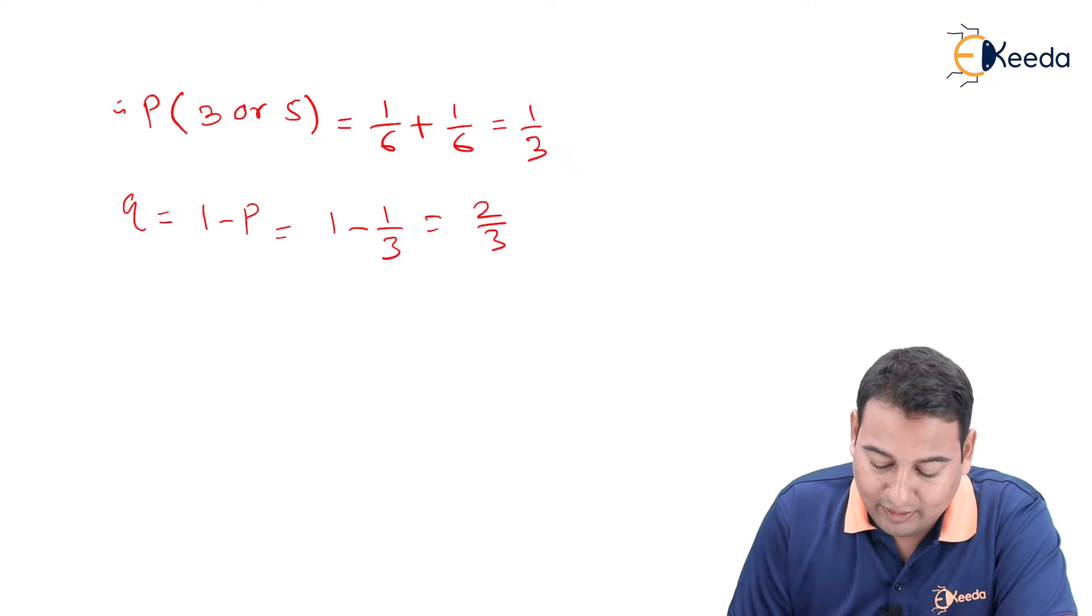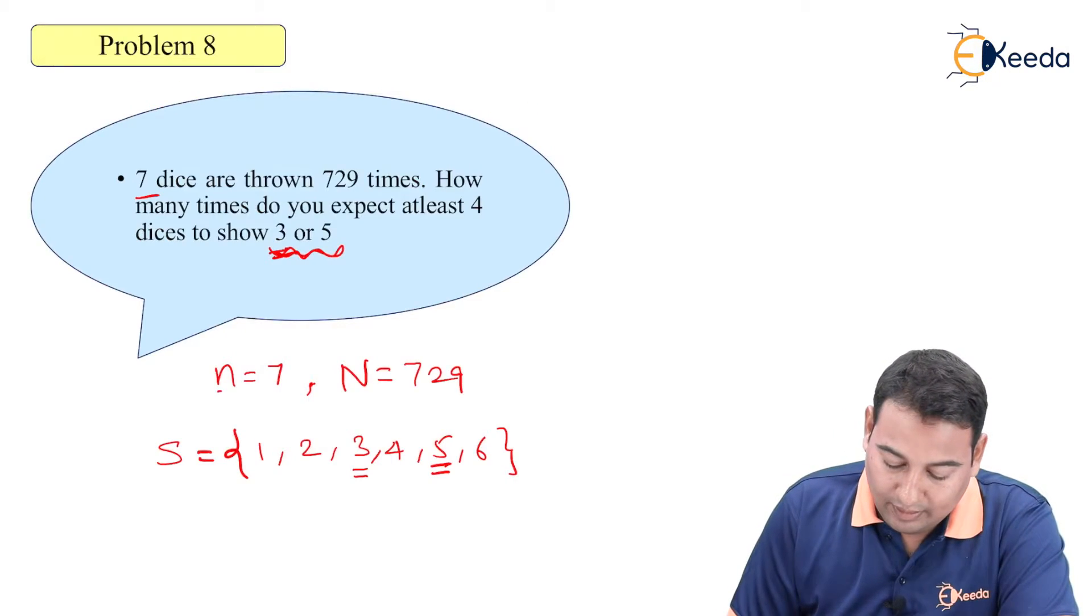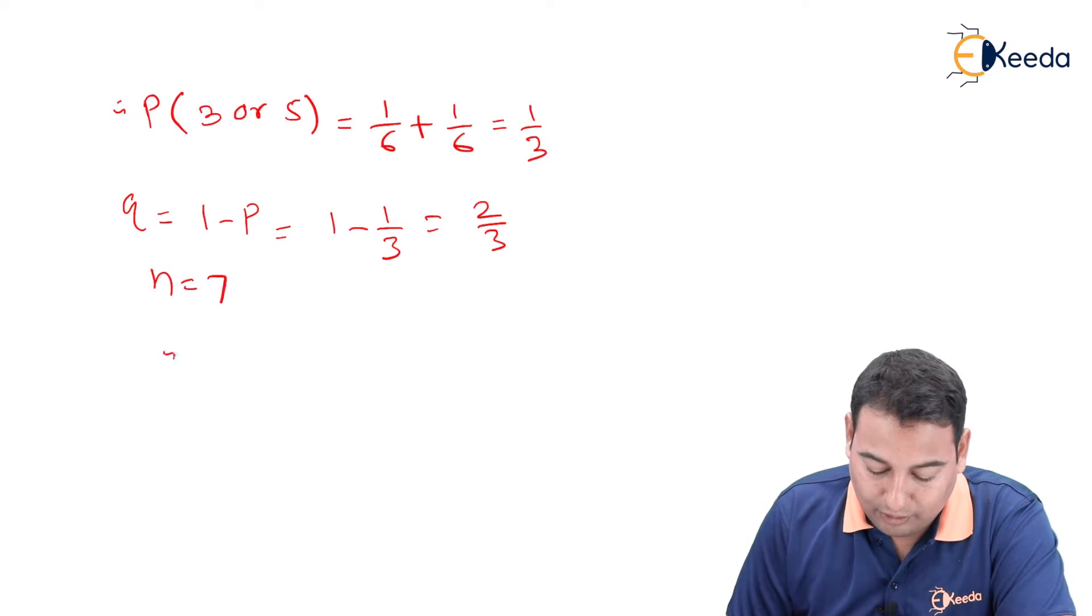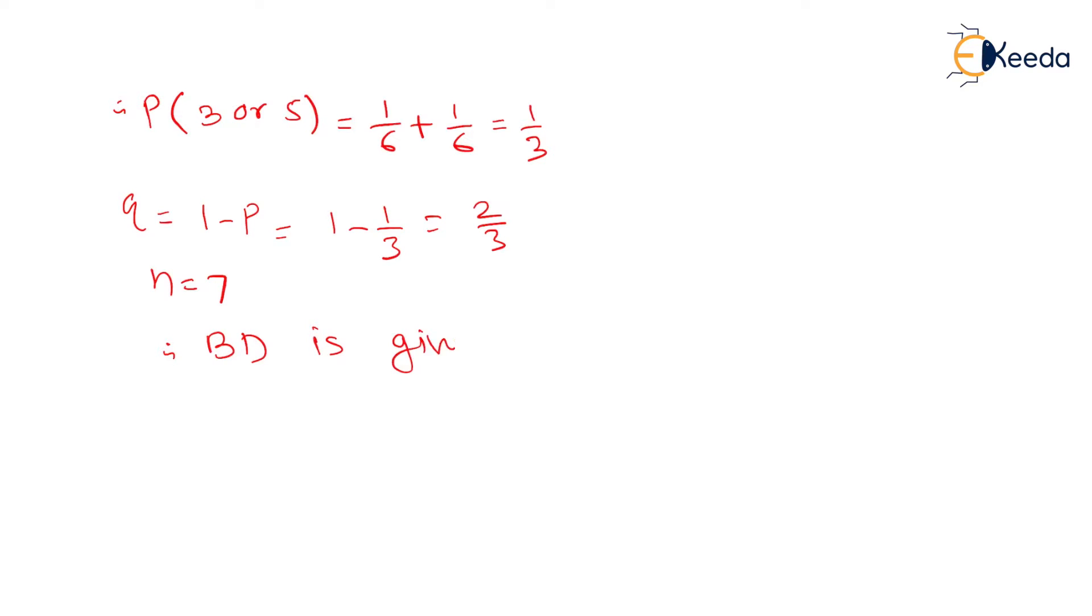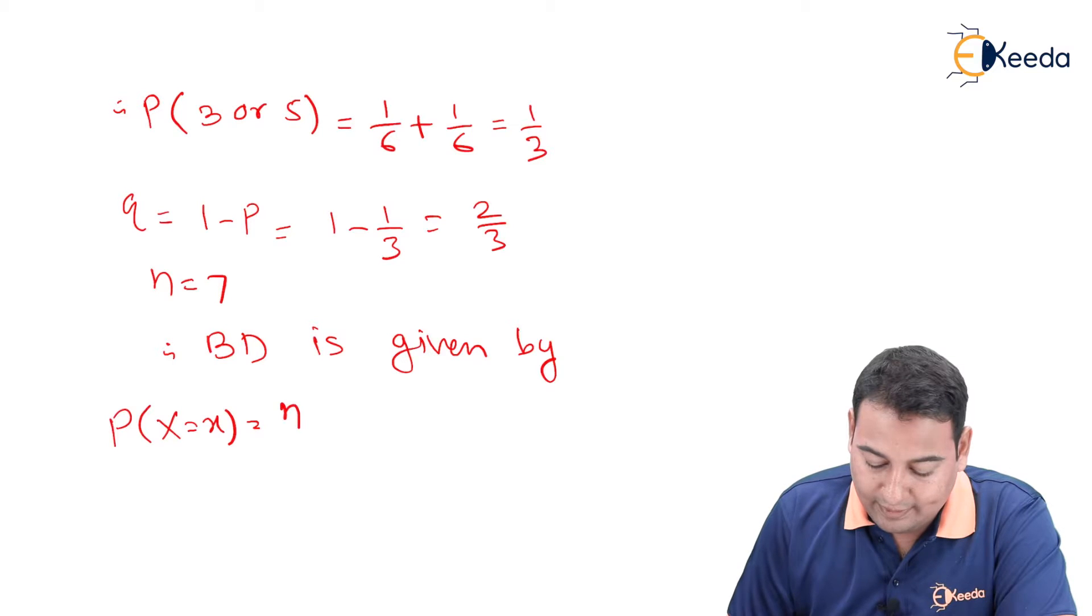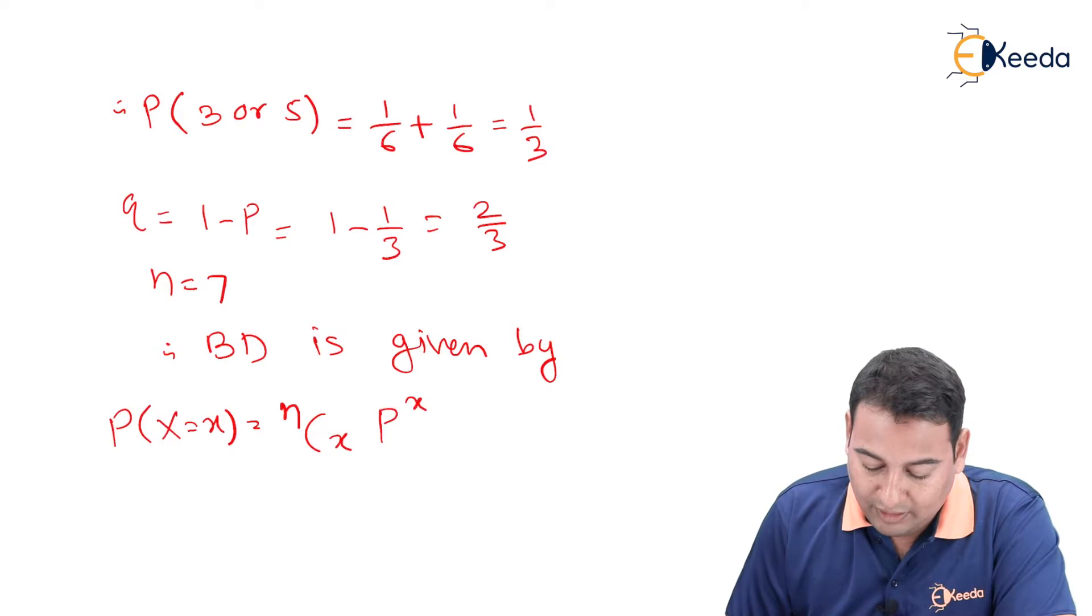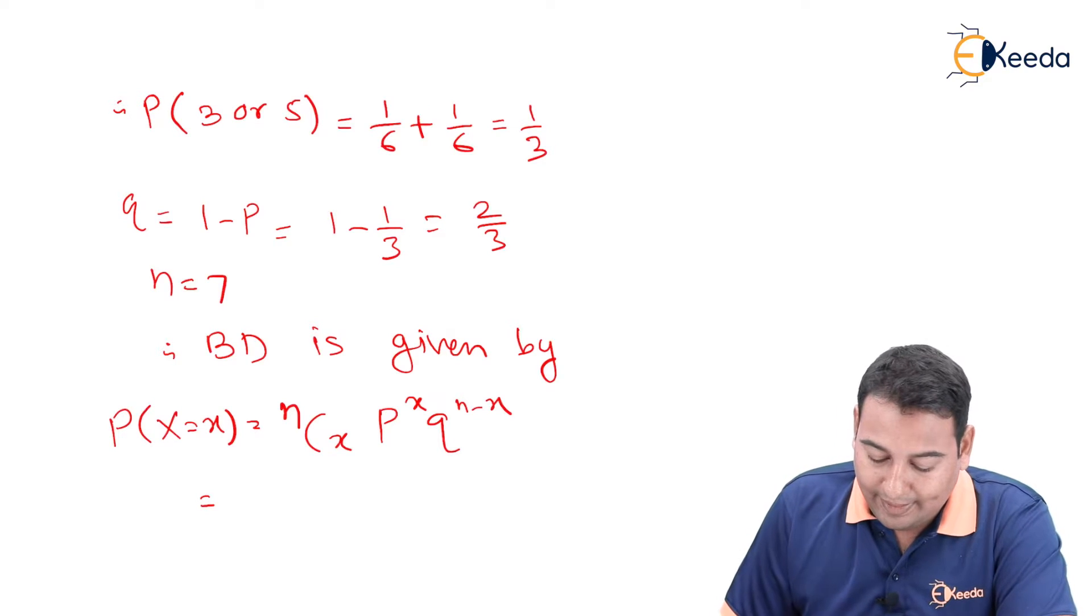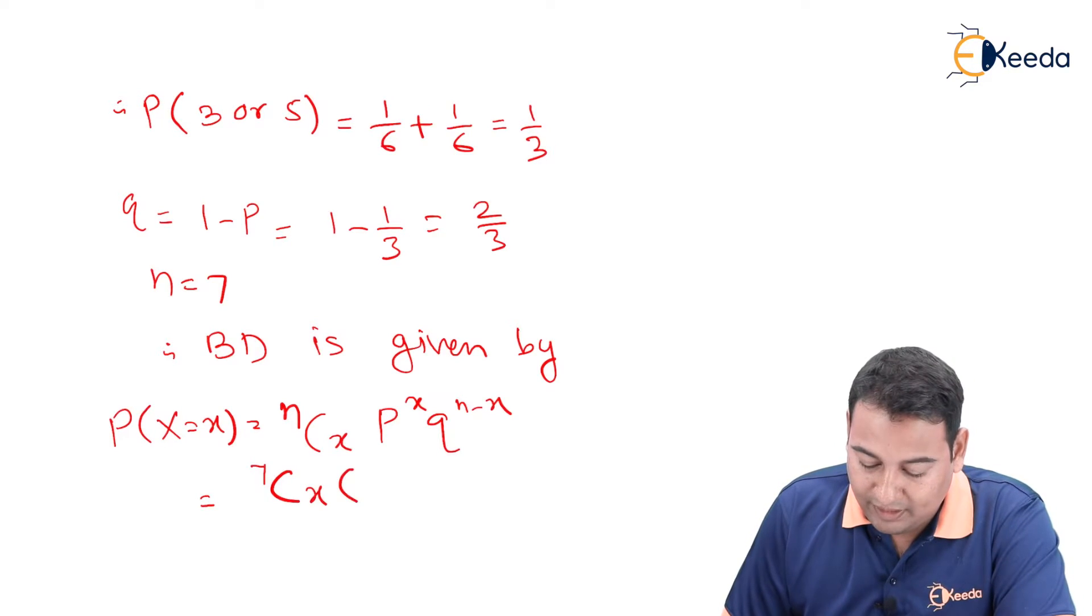2/3. N is already given to us, which means we can write the binomial distribution: P(X=x) = nCx * p^x * q^(n-x). Let's put values: n is 7, Cx, p is 1/3 raised to x, and